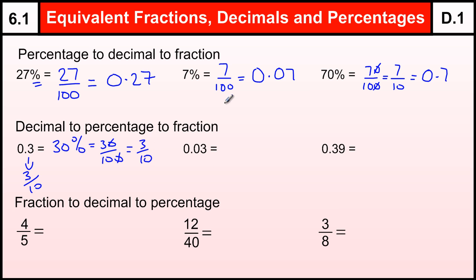0.03, again being careful not to make a mistake with this. Remember that the zero means that it's 3 out of 100 as a fraction, and therefore 3%.